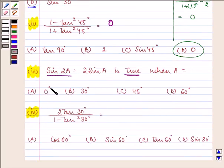when A is 0 degree we have sin 0 degree is equal to 2 into sin 0 degree and both of the sides will give us the answer as 0. So here the first option is correct and this is the answer to the third part.